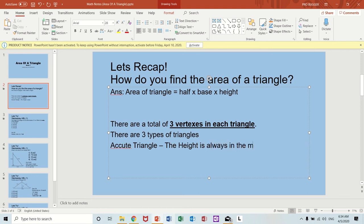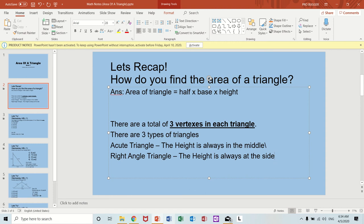Acute angle triangle means that the height is always in the middle. Right angle triangle, the height is always at the side of the triangle.